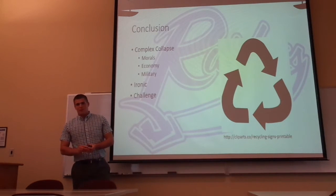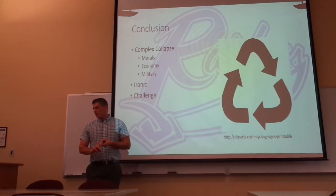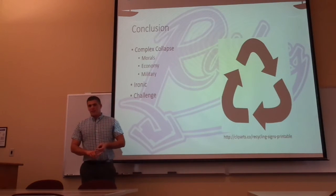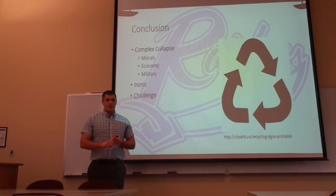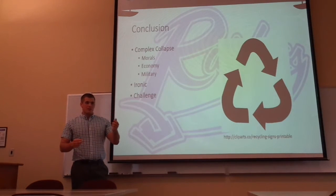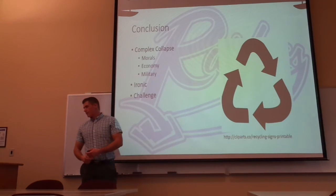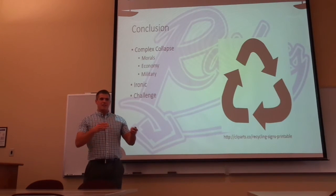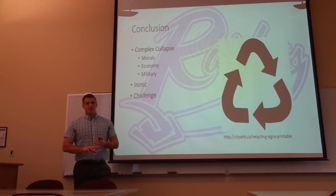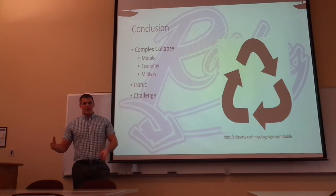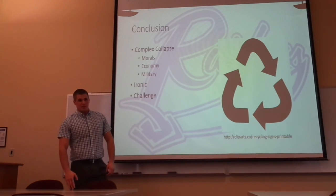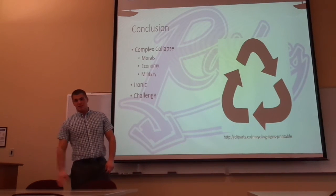To wrap up my presentation, the collapse of Rome is a complex collapse involving a decline in morals, economic troubles, and military struggles. The decline of Rome can also be seen as ironic because the same issues that led to the increase of the empire also led to its decrease. I would also like to provide a challenge: take a look at what happened in history and try not to repeat it today. Maybe you're just one individual, but you might be able to do one thing — like holding a door for somebody — that inspires an even bigger, kinder act. Thank you.